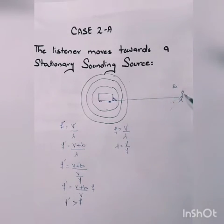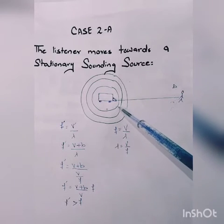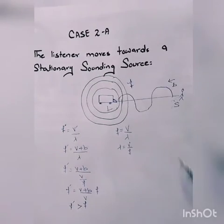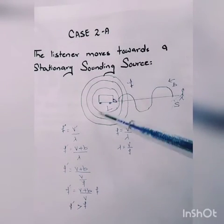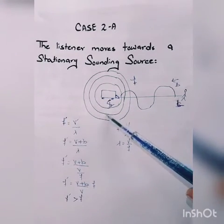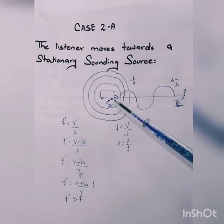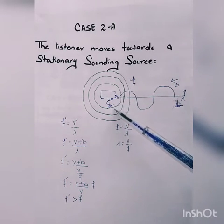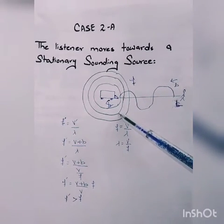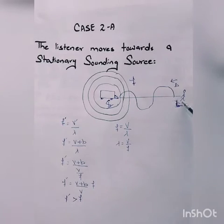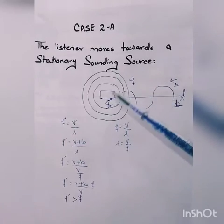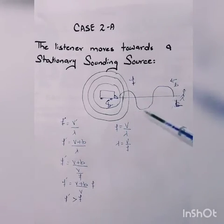First, we take the case when the listener moves towards the sounding source, which is at rest. We consider a source of sound S and a listener L. When both source and listener are initially at rest, the number of waves generated by the sounding source and received by the listener in one second equals F, which is the frequency of the sound when both listener and source are at rest.